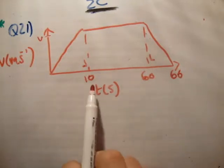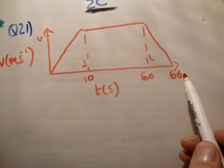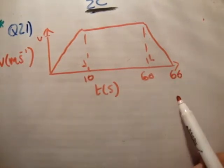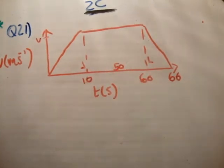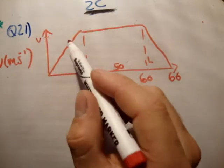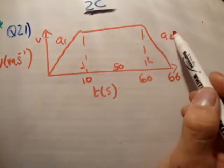So there is my speed time diagram as normal. I've marked in the positions, 10 seconds, total time is 66. We know from here to here is 6, there from here to here is 50 seconds, and that point is 60. We're given a maximum speed of V and accelerations A1 and A2.